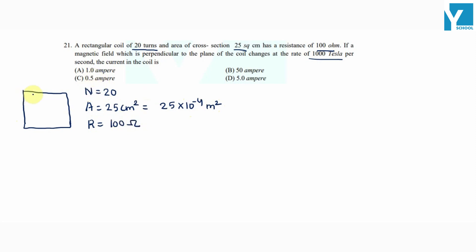Given that a perpendicular magnetic field, which we are representing with a dot, means field is perpendicular to the plane and is coming outside. So, dB/dt, change in magnetic field, is equal to 1000 tesla per second.